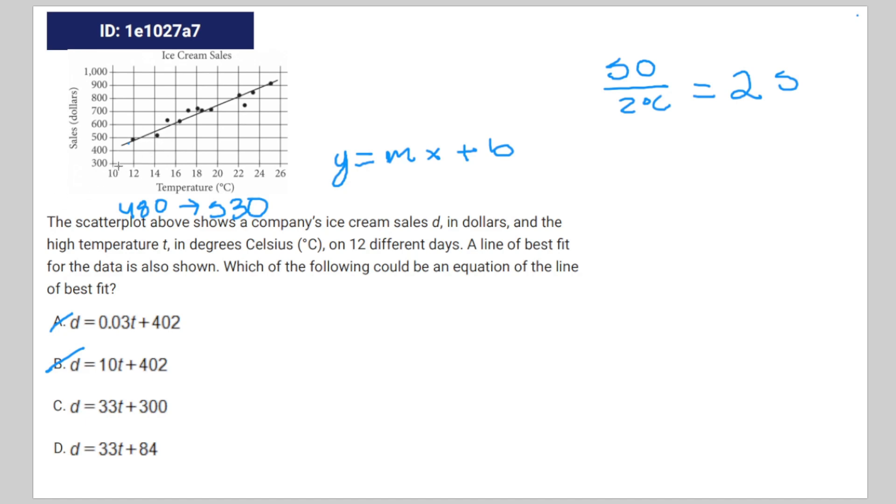You have to realize that the graph only goes as low as 10. So if we were to continue the line of best fit, the sales would be far below 300 by the time that the temperature was equal to zero. So the y-intercept, which correlates to b, simply can't be 300.